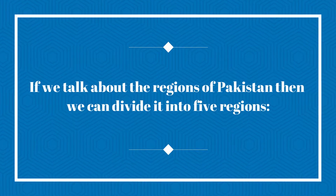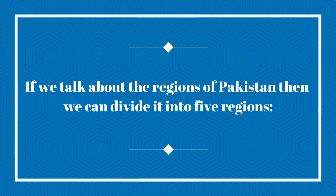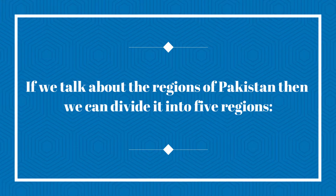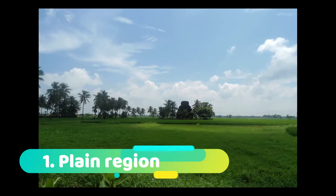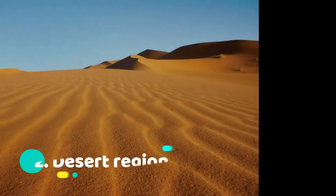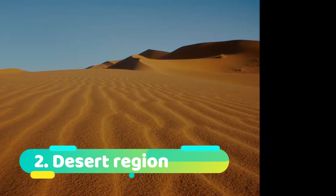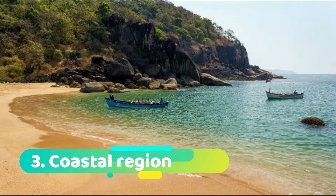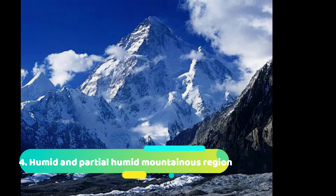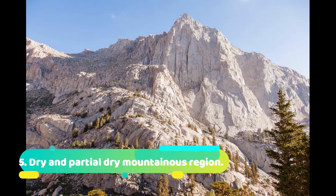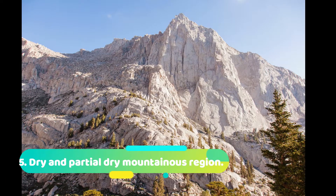Agar Pakistan ki regions ke baare mein baat karein toh hum in ko five regions mein distribute kar sakte hain: number one plain region, number two desert region, number three coastal region, number four humid and partial humid mountainous region, and number five dry and partial dry mountainous region.